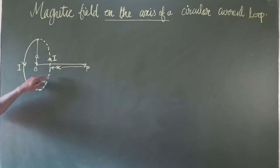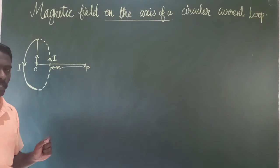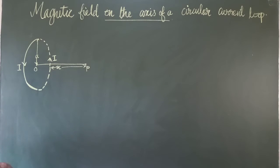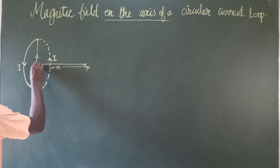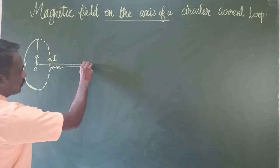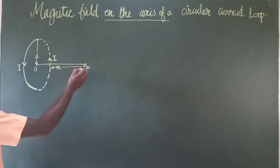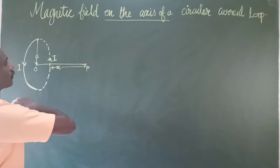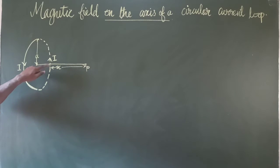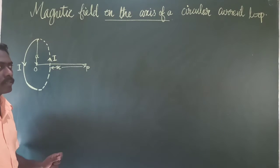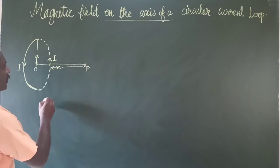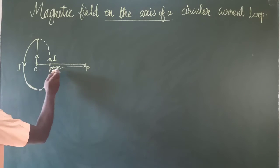We consider a circular current loop through which a current I is flowing, and the centre of the loop is O. We consider a point from O along the plane of the paper at point P (referred to as V). The current is flowing through the conductor in the anti-clockwise direction, and the point P is located from the centre of the loop at a distance X.